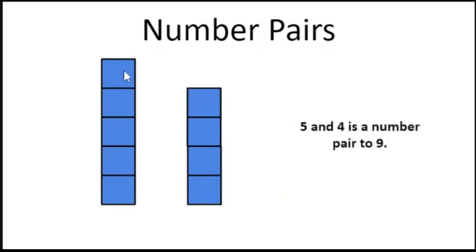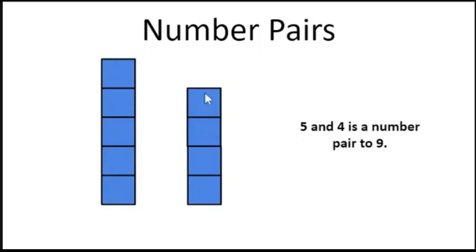Let's count these. One, two, three, four, five. One, two, three, four. Five and four is a number pair to nine.